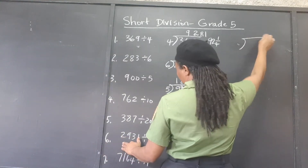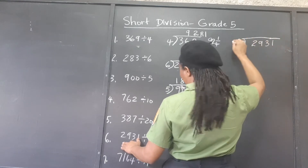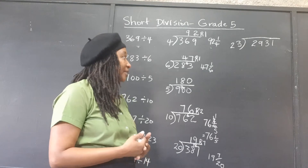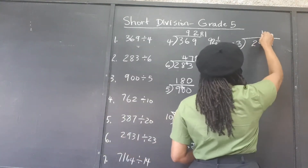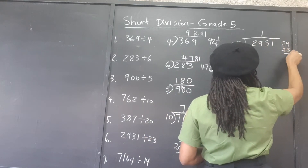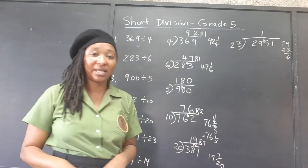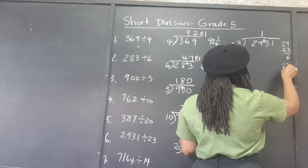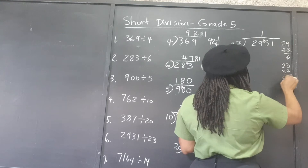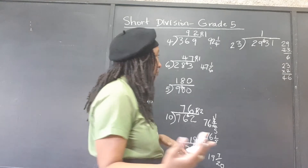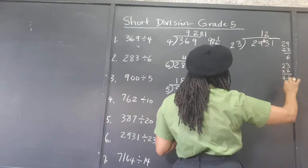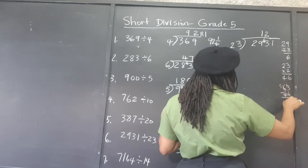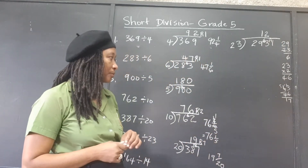We have 2,931 divided by 23. 23 into 2, we can't. 23 into 29 — clearly only one time. You can subtract at the side if you want. 6 are left; we put the 6 there. 23 into 63 — that sounds like it can go 2 or 3 times. Let's try 2: that would give 46. And if we add another 23 it's going to go over 63. So it's 2 times. Taking 46 from 63 — that's 17 left.